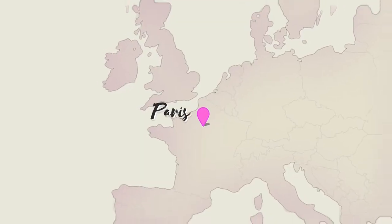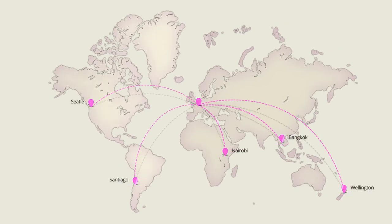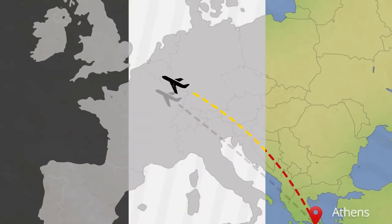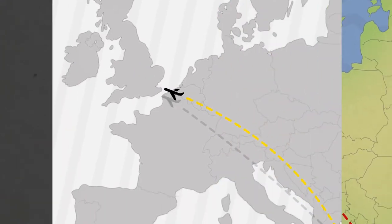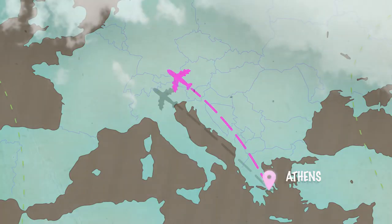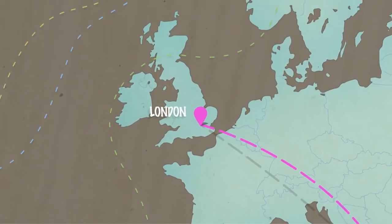With six detailed continents and a map of the world, you can show where you are headed and keep your viewers informed every step of the way. Pick from one of our three pre-made visual styles, then tweak every color, line, and icon design to the smallest bit of detail to create a unique look that reflects your personal brand.